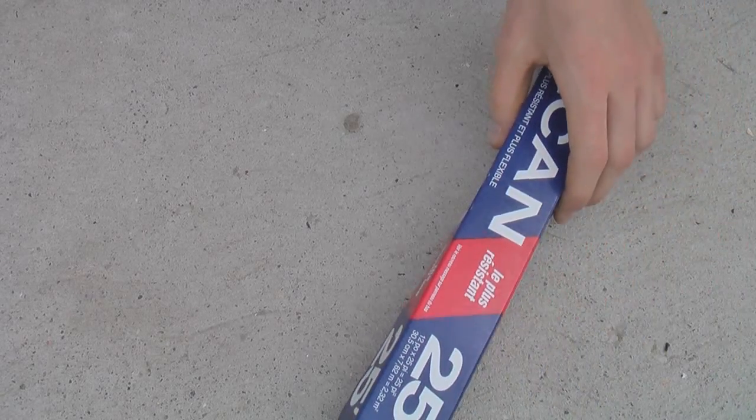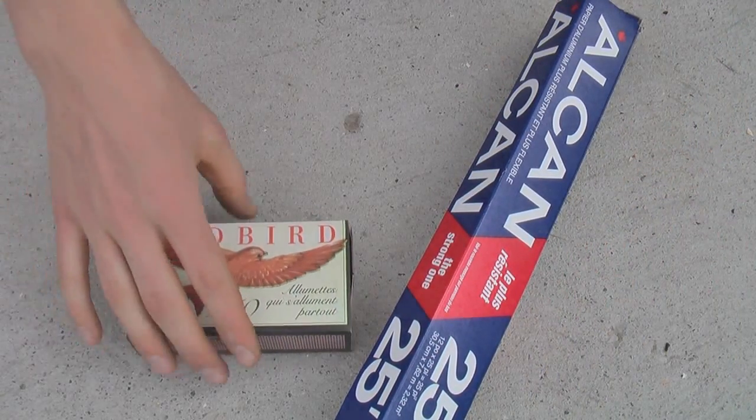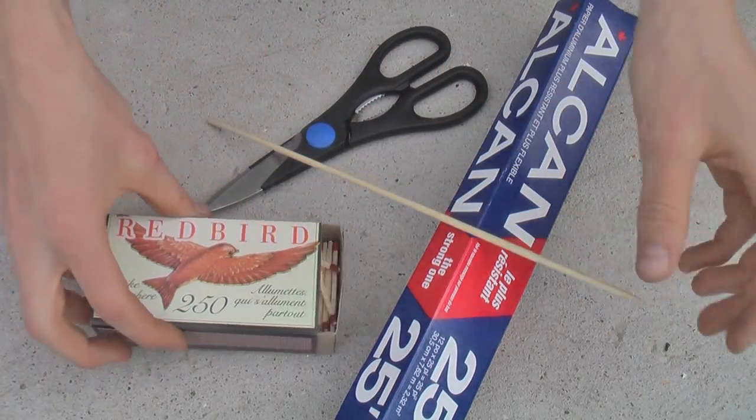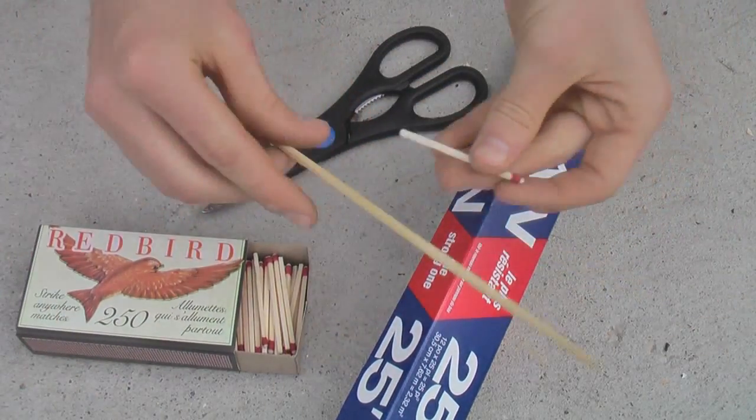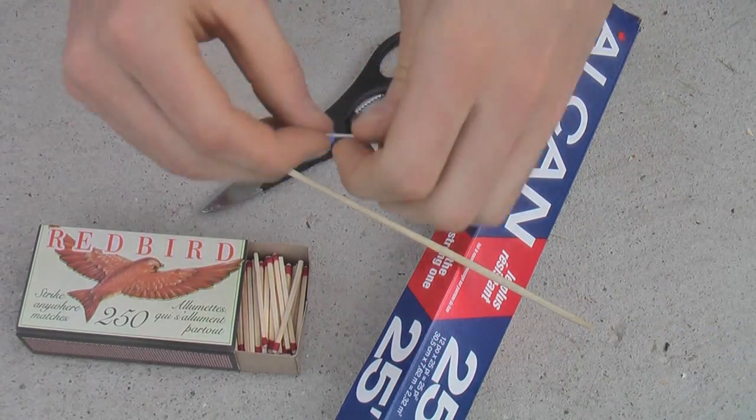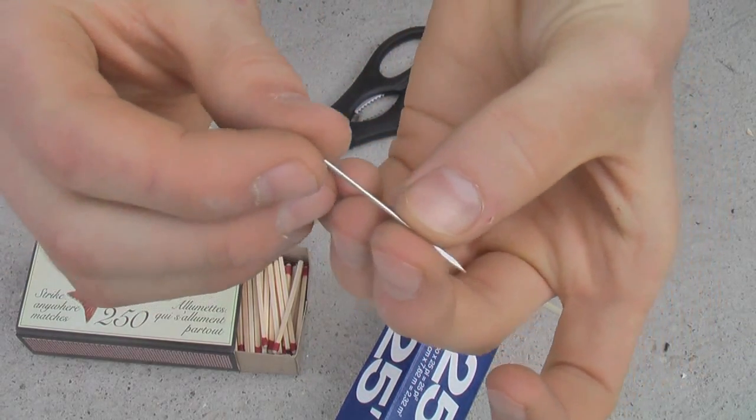To make this you'll need some aluminum foil, some matches, a pair of scissors, a stick that's about the same thickness as one of the heads of your matches, and a small object such as a paper clip, or in this case I'm just using a small needle.